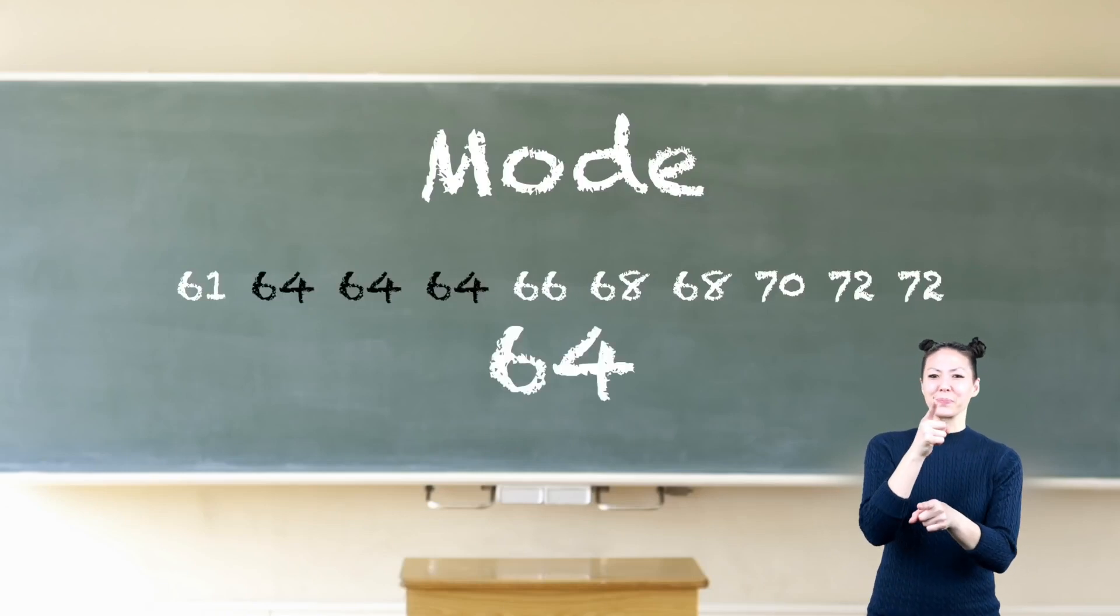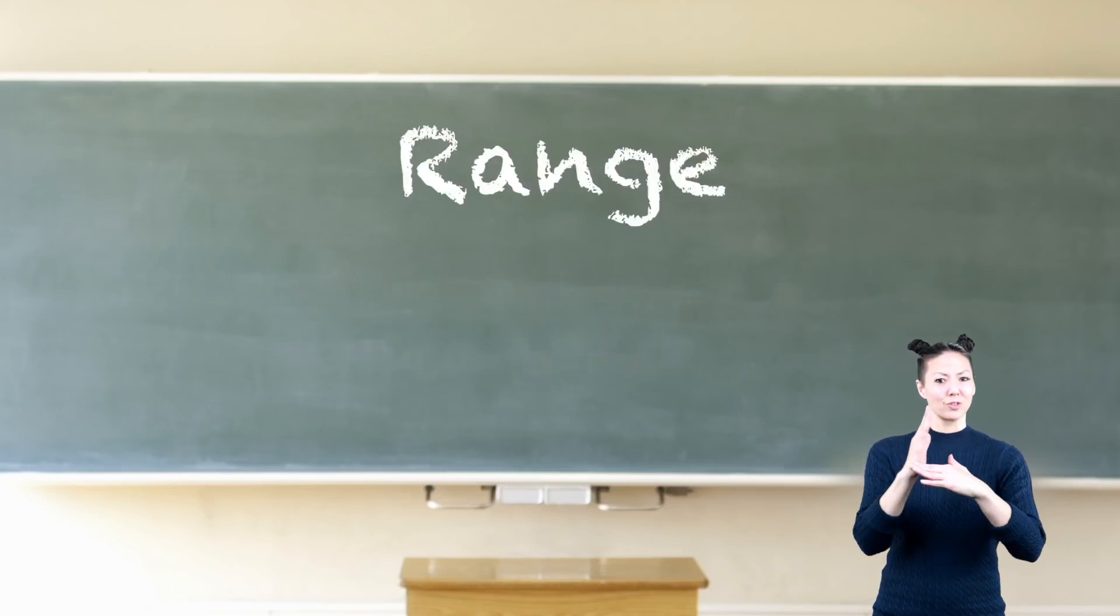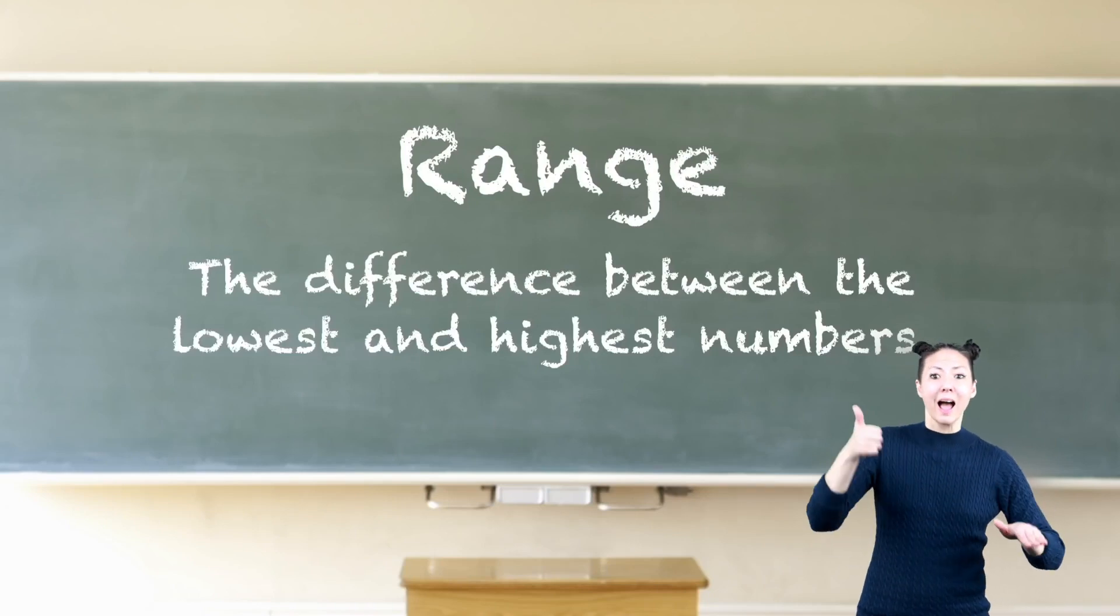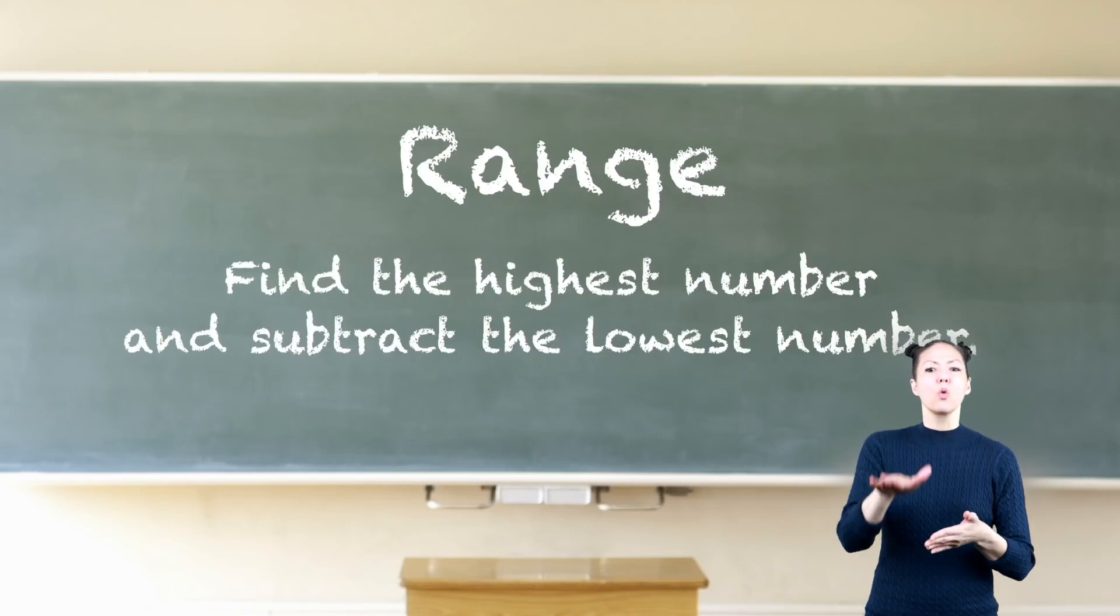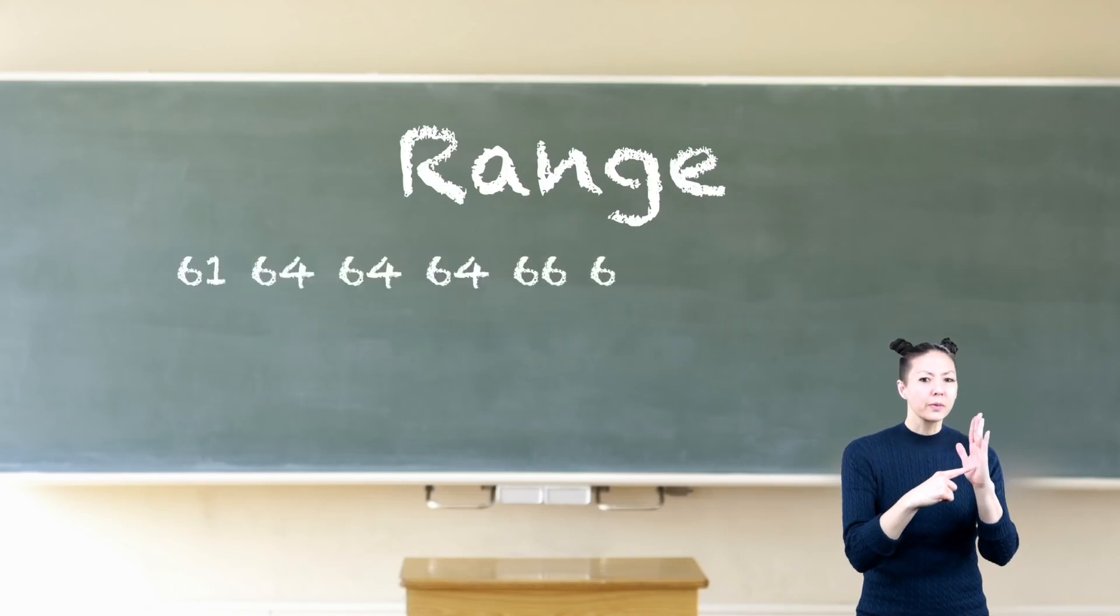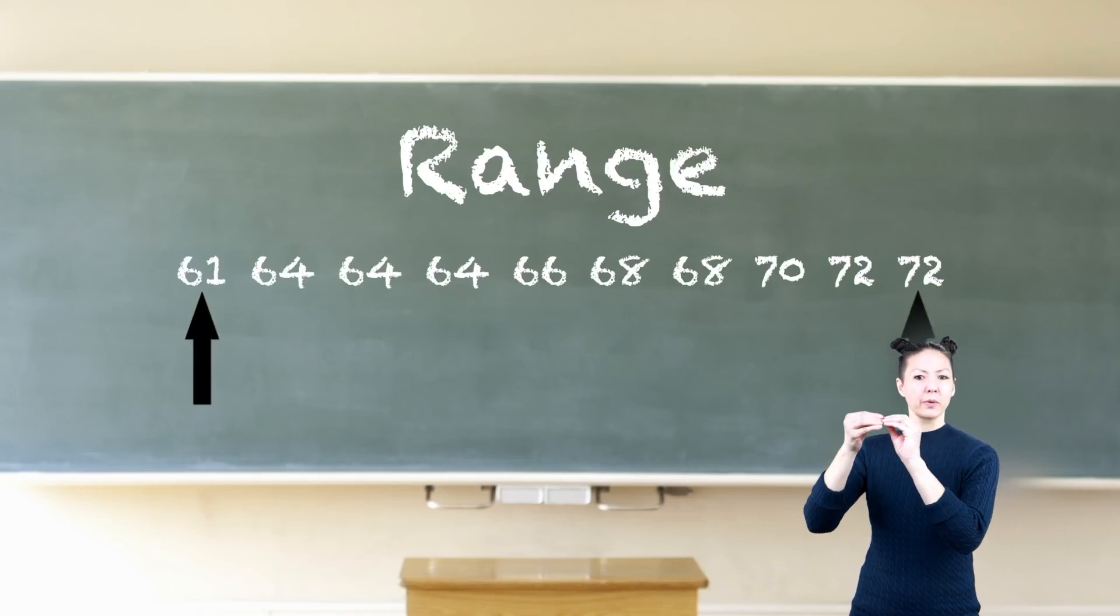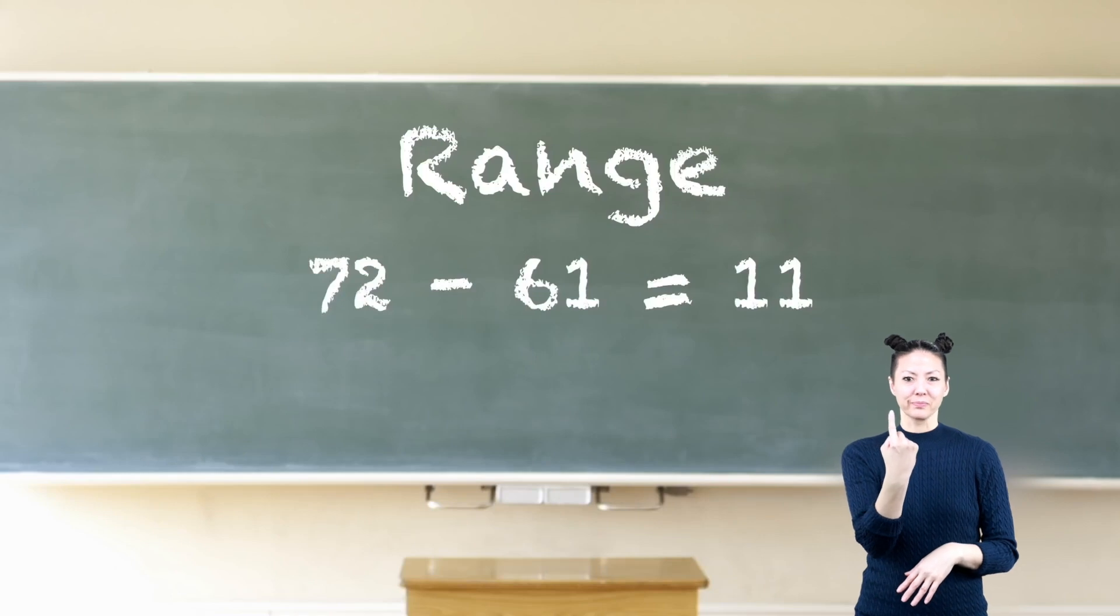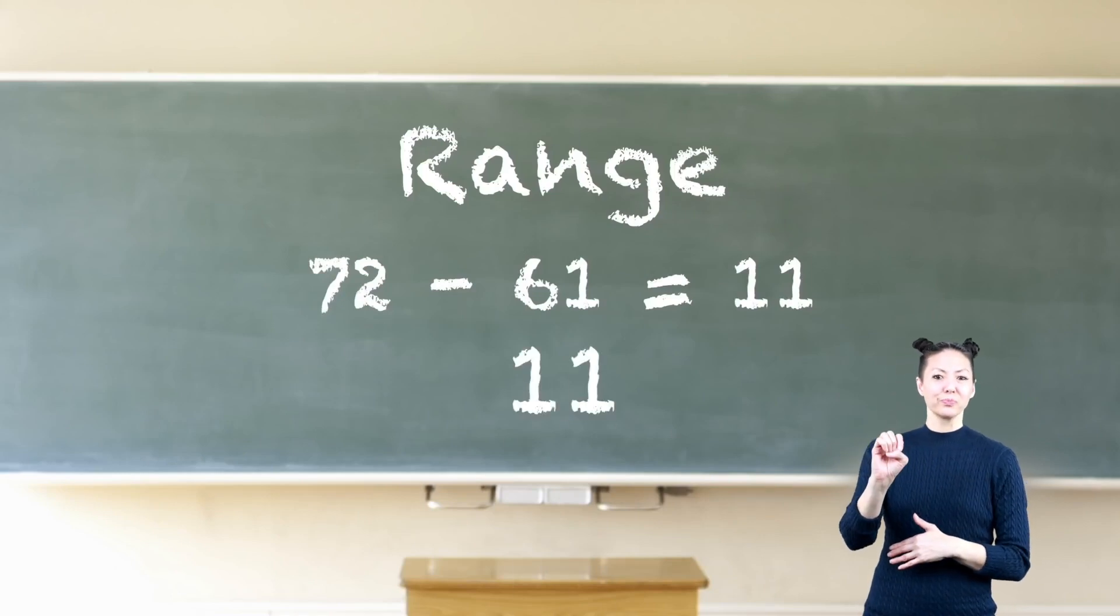Range: the range for a set of data is the difference between the lowest and highest numbers. Find the highest number and subtract the lowest number. For example, subtract the smallest number from the largest number, so 72 minus 61 equals 11. So 11 is the range.